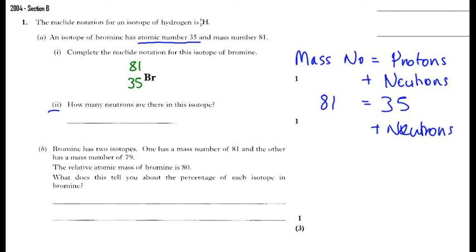We can work out the neutrons by taking thirty-five from eighty-one, so the neutrons equals eighty-one minus thirty-five, which is equal to forty-six. So, how many neutrons are there in this isotope? Forty-six neutrons.